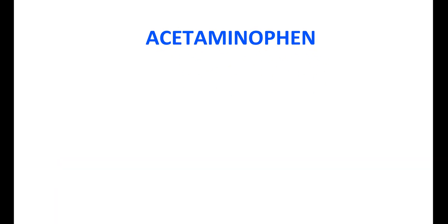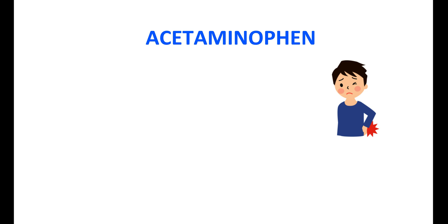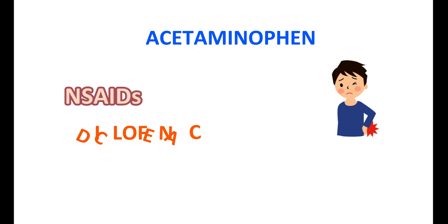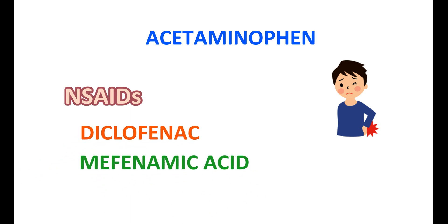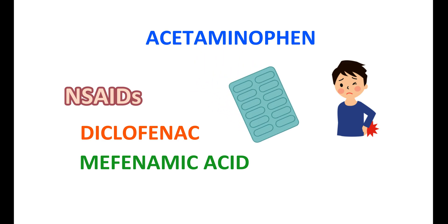Acetaminophen can be used to treat pain, but other analgesics like NSAIDs — non-steroidal anti-inflammatory drugs such as diclofenac and mefenamic acid — can also be used for pain. Acetaminophen can be combined in the same tablet with these drugs, which may increase the risk of overdosing when such combination tablets are taken along with separate acetaminophen tablets.